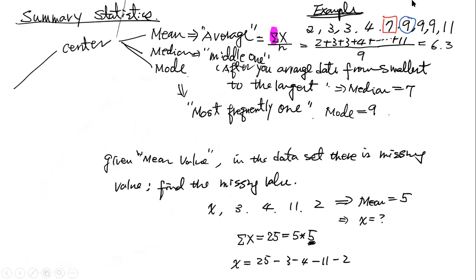Before we continue the worksheets, let's do a quick review of what we did in the first video. If you don't remember, I strongly recommend you go back to the first video to make sure you understand what we discussed. Summary statistics has two parts: one is for the center and one is for the spread. For the centers, we have three things: mean, median, and mode. The mean is the average. The median is the middle one when you arrange numbers from smallest to largest. The mode is the number or numbers that happen most frequently.